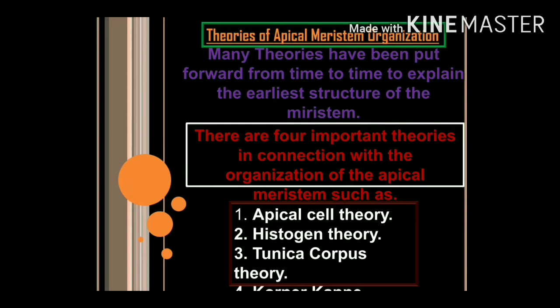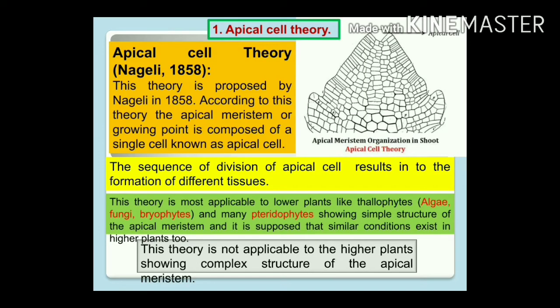There are four important theories in connection with the organization of apical meristems: apical cell theory, histogen theory, tunica corpus theory, and corpora capi theory. Out of these four, we are going to discuss the first three: apical cell theory, histogen theory, and tunica corpus theory. Let us start with the apical cell theory.